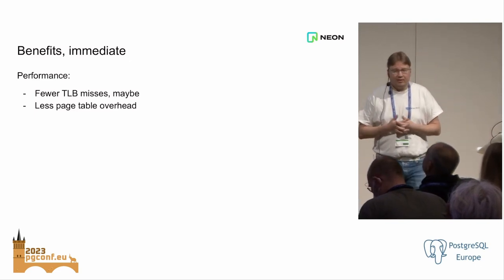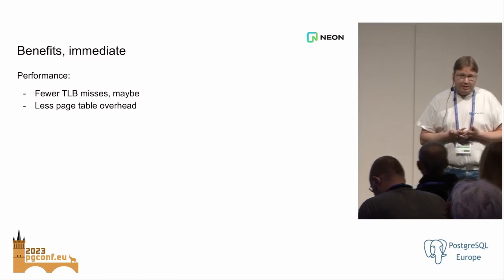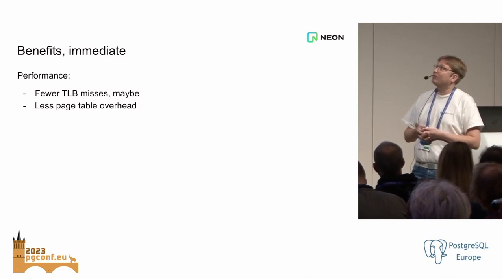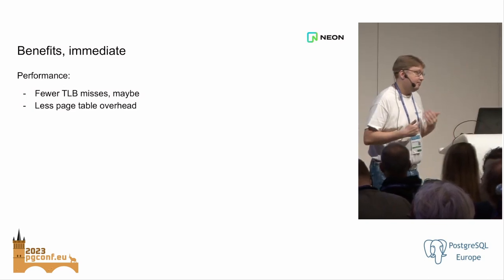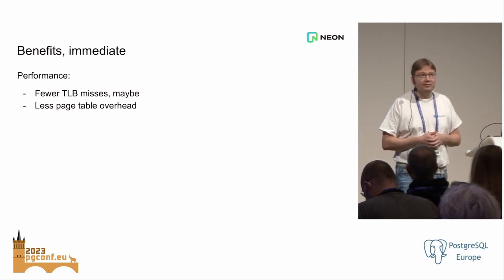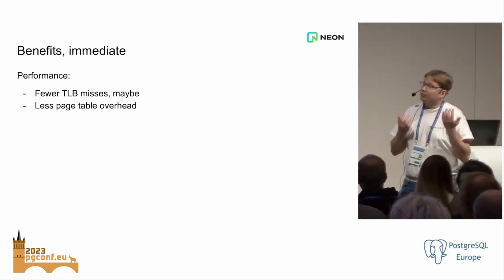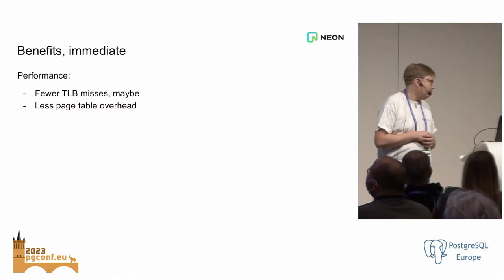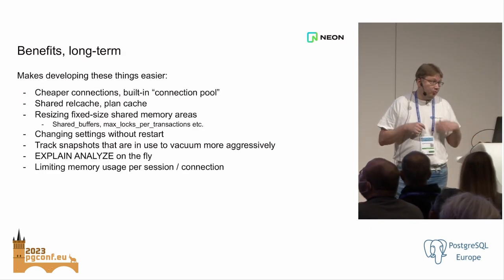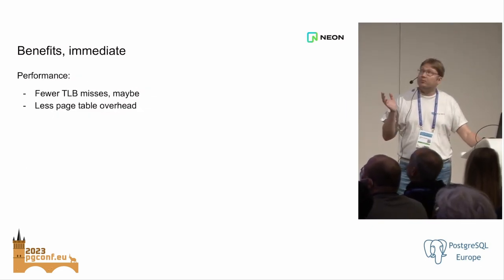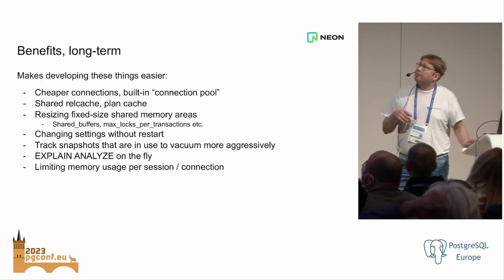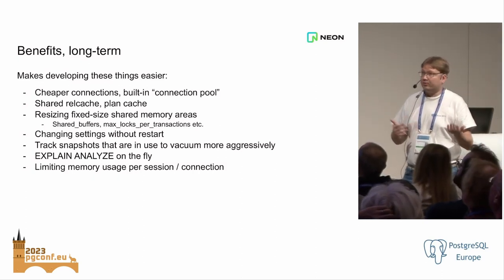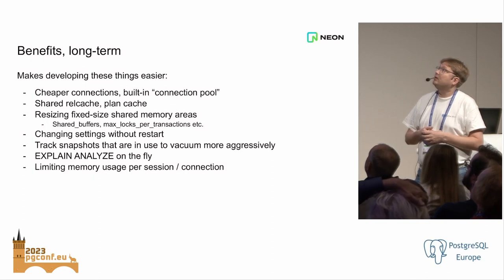So why would we do this? What are the benefits? One immediate benefit I think we'd get is a little bit of extra performance if you have a CPU-heavy workload. Having a lot of processes makes the context switching more expensive in the kernel, so with multi-threading you get fewer TLB misses in the CPU and fewer page faults. But really what I care about most — I haven't done any measurements on those performance aspects — is the stuff about making life easier for developers like me working on Postgres.